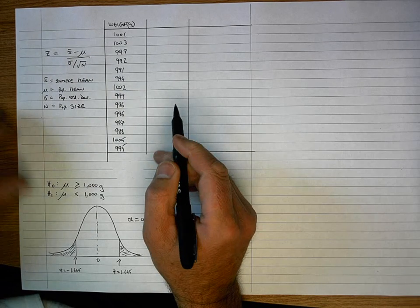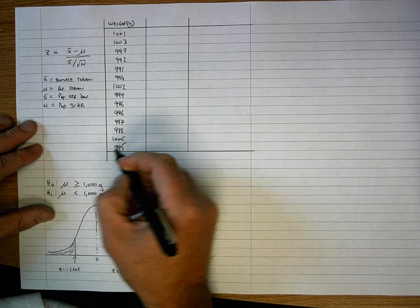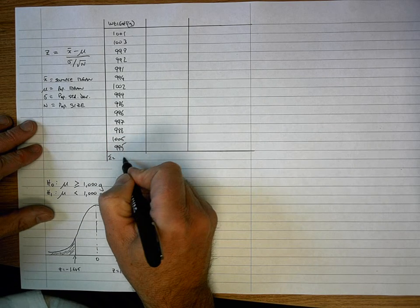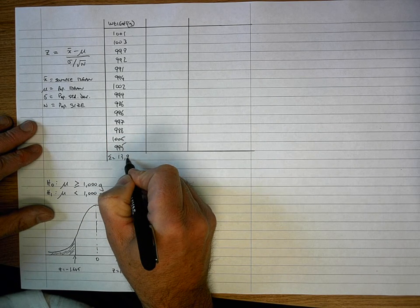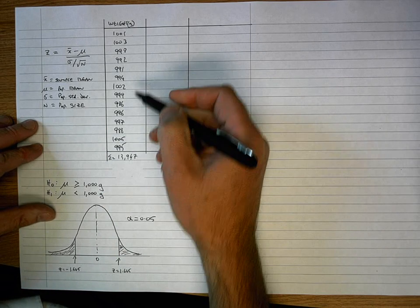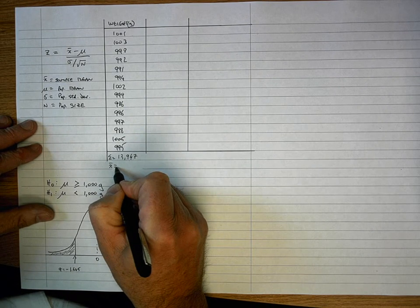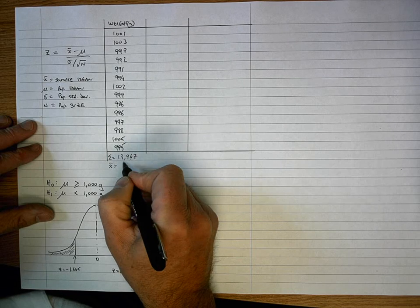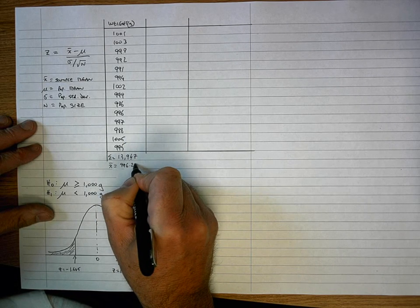So first off, let's calculate the mean. When I add up all of these numbers here, I get a value of 13,947. And when I divide that by n, which is 14, I get a value of X-bar equal to 996.21.